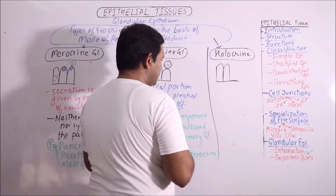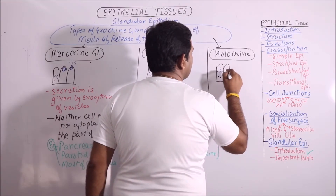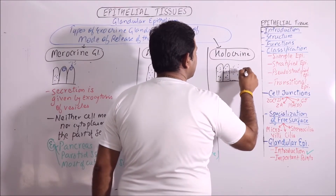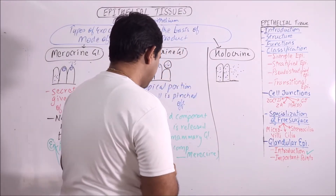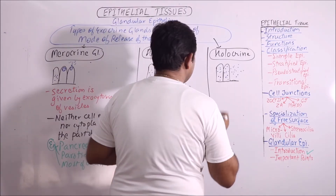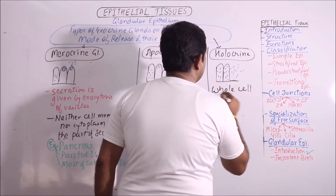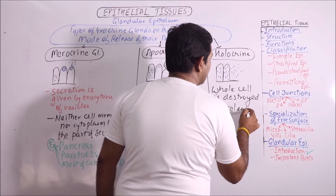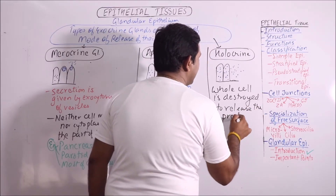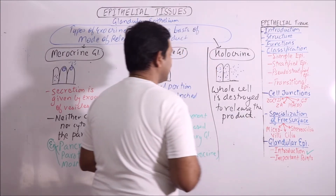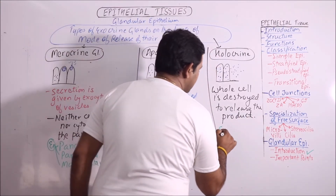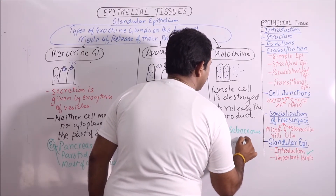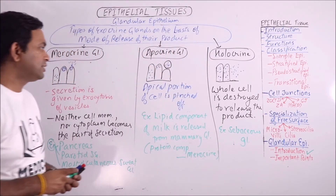The last one is holocrine — 'holo' meaning complete. In this mode of secretion, the secretion accumulates in the cell and the whole cell is destroyed to release the secretion. The whole cell is destroyed to release the product, and thereafter it is replaced by another cell which will continue the process. Examples include the oil-secreting glands of the body — that is, sebaceous glands and modified sebaceous glands.